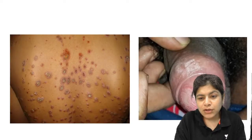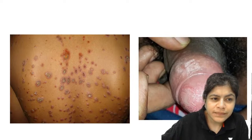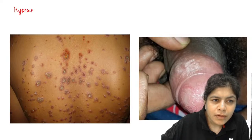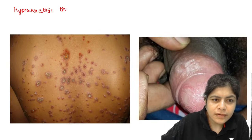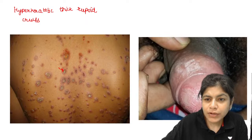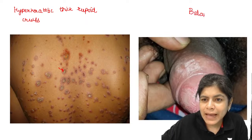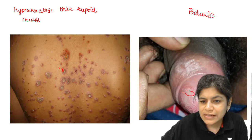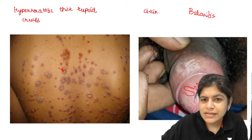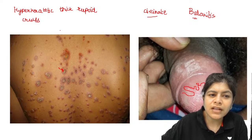Now look at this image. You can see thick hyperkeratotic rupioid crusted lesions and inflammation of the glans — called balanitis. Specifically, this is circinate balanitis, along with psoriasiform hyperkeratotic lesions covered with thick rupioid scales and crusts. Dr. Sumit is correct — this is Reiter's syndrome, also called reactive arthritis.